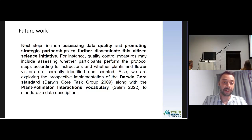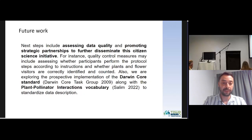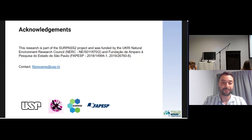For future work, we are assessing data quality right now. We have many topics we are discussing to improve the quality of FIT Count data, to promote its reuse, and to share it across different platforms. We are talking about implementing the Darwin Core standard with the plant-pollinator interactions vocabulary to standardize the data description. It's a bit challenging since we only have broad taxonomic identification for the groups, so we are still discussing how to do this — but it's something we have to work on in the upcoming months.